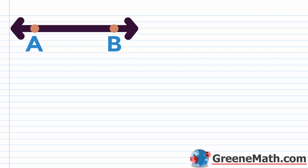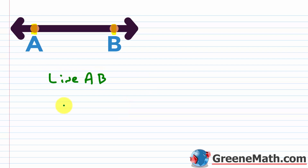We'll think about the concept of a line, a line segment, and a ray. Suppose that we have two distinct points — here on the screen you'll see point A and point B. Those two distinct points can be used to determine a line, as you can see drawn through them. We can use those letters A and B to name the line — we could call this line AB, or we could write AB with a line on top.